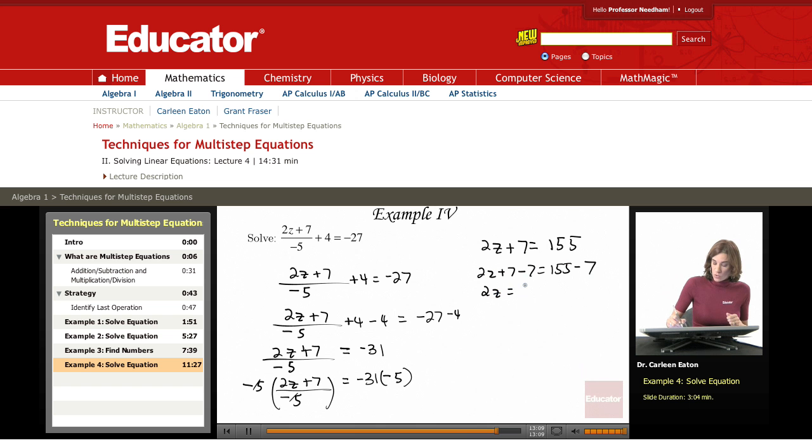2z equals 148. Using the multiplication principle or the division principle, which are actually pretty much the same thing, you're going to divide both sides by 2.